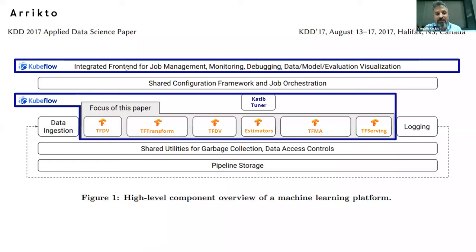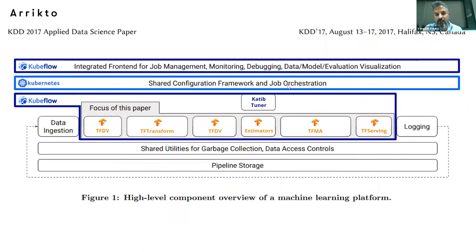You need an integrated front-end for job management, monitoring, debugging — data scientists like notebooks. Kubeflow comes with a dashboard and a notebook-based UI with Jupyter notebooks. The notebook manager is actually part of what we have contributed to Kubeflow. You also need a shared configuration and job orchestration framework. Kubeflow has taken a hard dependency on Kubernetes for this. All notebook servers, training components, the hyperparameter tuner — everything runs as pods on Kubernetes.